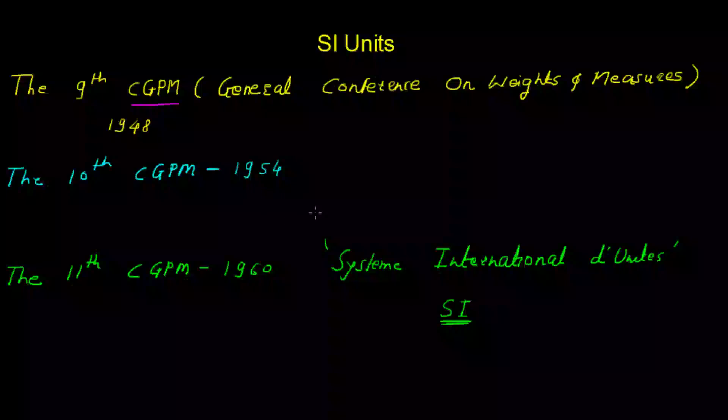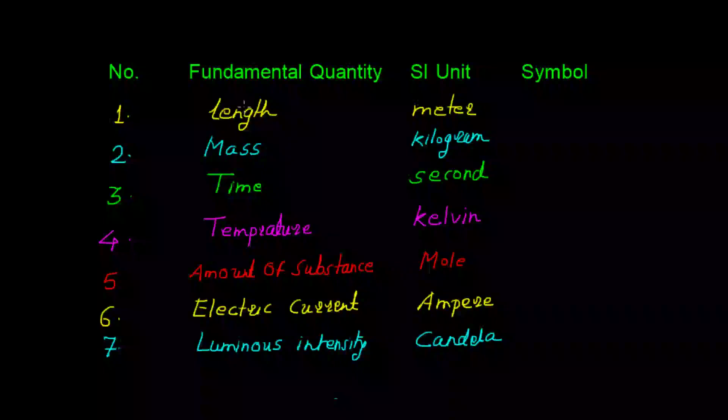The seven fundamental quantities were adopted in 1954. The first one is length. Its SI unit is meter and its symbol is m.